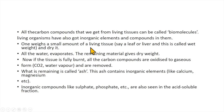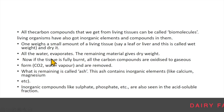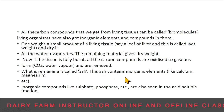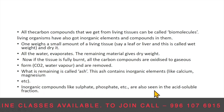Now, a living sample of tissue will be found to contain organic compounds. To identify inorganic compounds, one weighs a small amount of living tissue — say a leaf or liver. This is called the wet weight. After drying, all the water evaporates and the remaining material gives the dry weight. Now if the tissue is fully burnt, all the carbon compounds are oxidized to gaseous form — carbon dioxide and water vapor — and are removed. What remains is called ash. This ash contains inorganic elements like calcium, magnesium, and inorganic compounds like sulfate and phosphate, which are also seen in the acid soluble fraction.